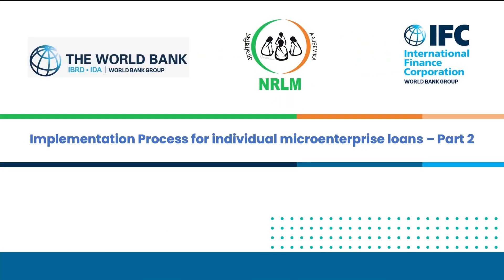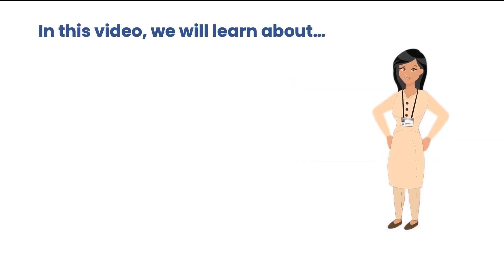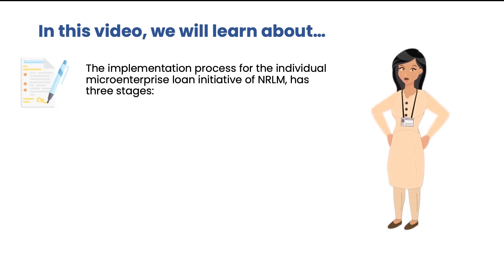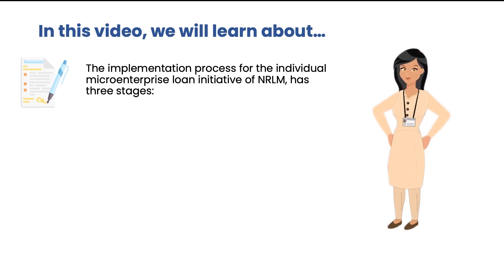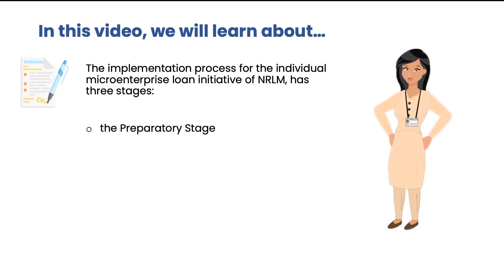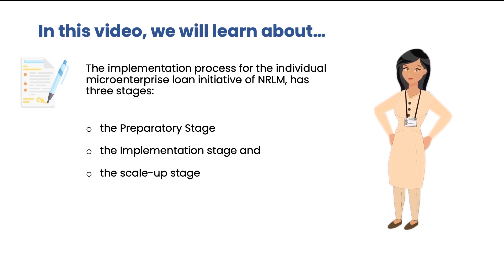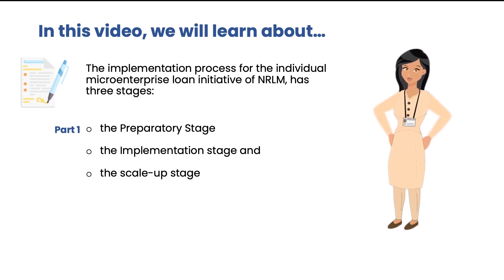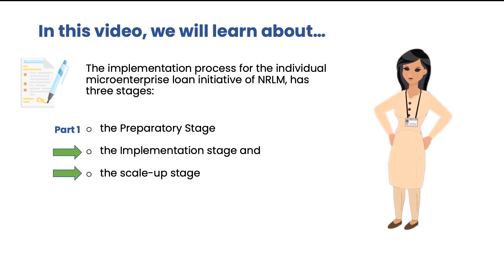Implementation Process for Individual Micro-Enterprise Loans Part 2. The Implementation Process for the Individual Micro-Enterprise Loan Initiative of NRLM has three stages: the Preparatory Stage, the Implementation Stage and the Scale-Up Stage. In Part 1 of the video, we discussed the Preparatory Stage in detail. In this part of the video, we will learn about the Implementation Stage and the Scale-Up Stage.